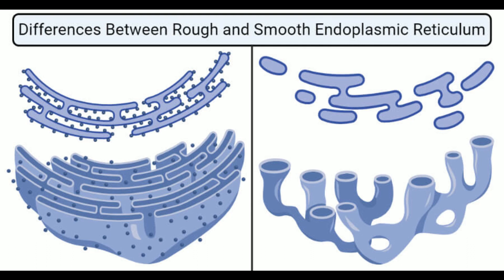In terms of function, rough ER is mostly associated with the production, modification, and transfer of proteins, while smooth ER is mostly associated with the production of lipids and the storage of calcium ions. Regarding diseases, spondyloepimetaphyseal dysplasia is attributed to the accumulation of misfolded collagen proteins in RER, whereas prolonged SER stress might result in the development and progression of many diseases, including neurodegeneration, atherosclerosis, type 2 diabetes, liver disease, and even cancer.